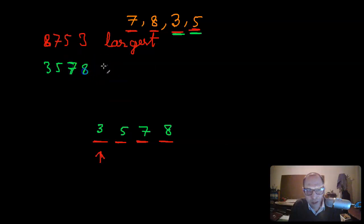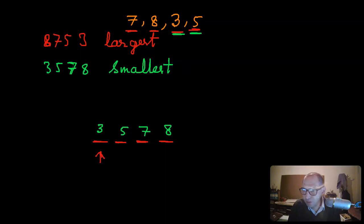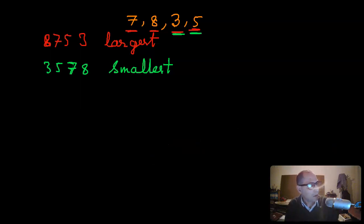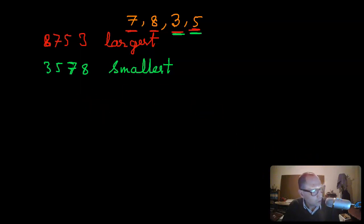Three five seven eight is the smallest number possible with these four digits. In the next video we will do a couple of exercises to work with this concept a little more. Thank you.